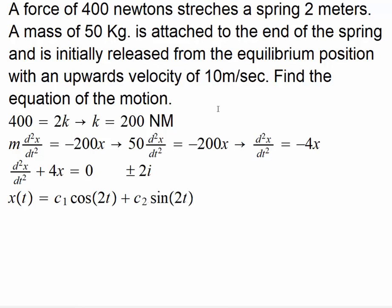Afterwards, let's use our initial conditions. It's released from equilibrium position, which simply means that x(0) is zero meters. And the initial velocity is given to be upwards velocity of negative 10 meters per second. Upwards means that we'll take X as negative.